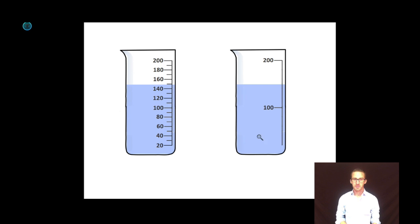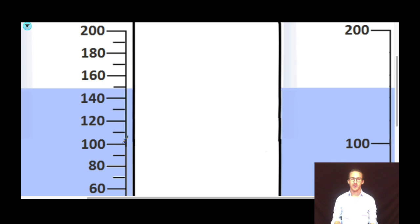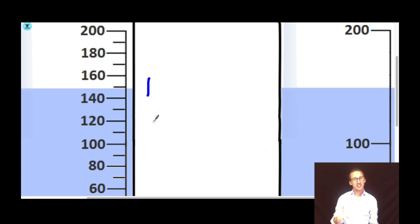even though they're both 200 milliliter beakers. As we compare the two beakers, the beaker on the left has graduations every 10 milliliters, while the beaker on the right only has graduations every 100 milliliters. What does this mean when we're trying to read these pieces of equipment using significant figures? As I take a look at the beaker on the left and think about significant figures, I know for sure that this volume is greater than 100 milliliters but less than 200, so my hundreds place value is known with certainty.